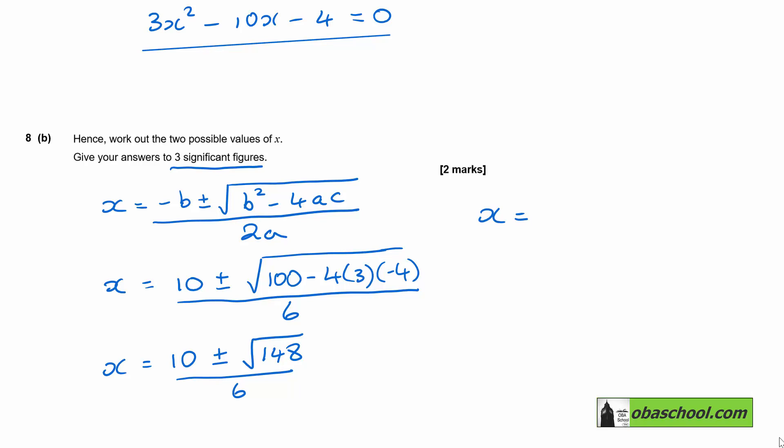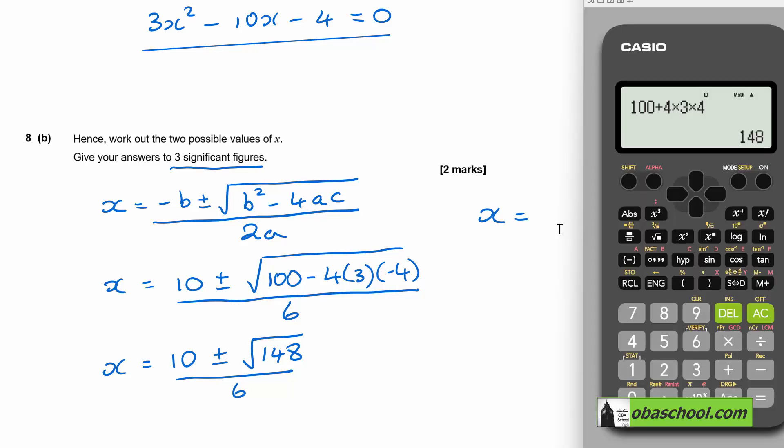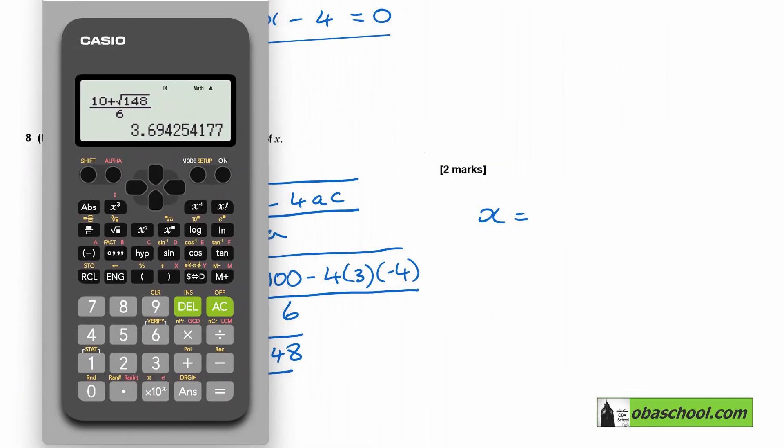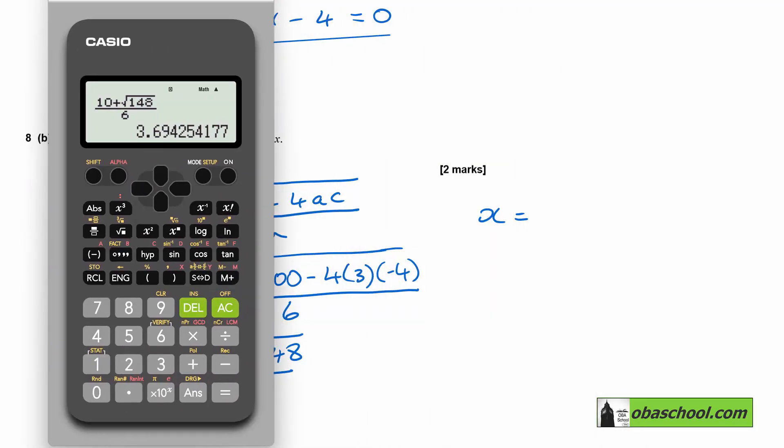So let's get our values of x. So we have got 10 plus the square root of 148, divided by 6. And three significant figures, that is 3.69.